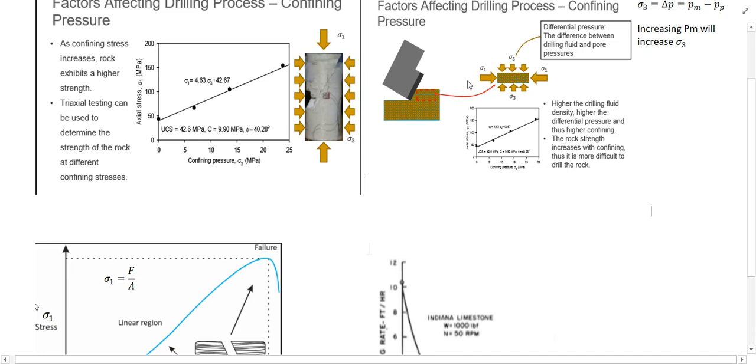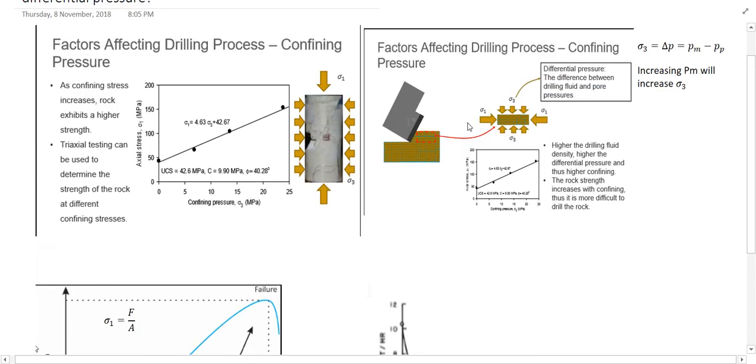Now consider that this is a cutter and this is the rock that we are drilling. We take out a small part to show the forces applying on it. Sigma 1 is applying on it due to the cutter, and then we have Sigma 3, the confining pressure. Actually, this confining pressure or Sigma 3 is differential pressure.